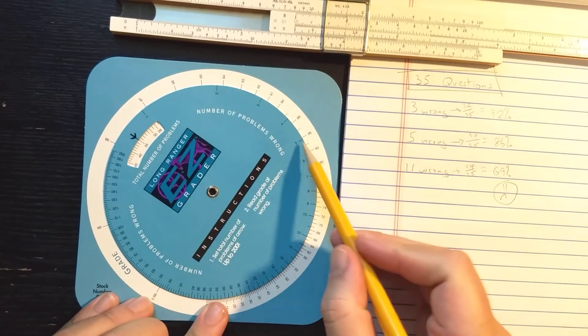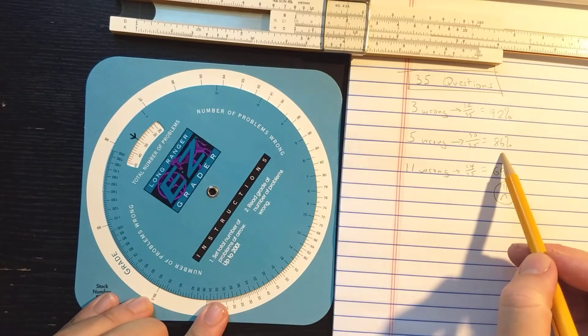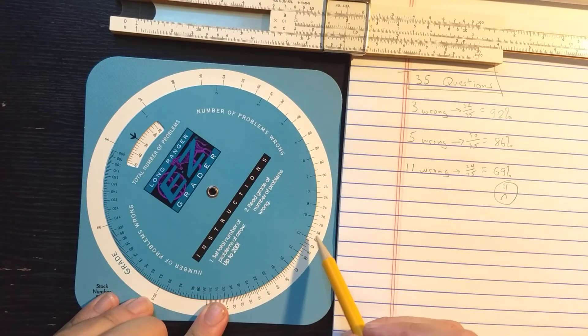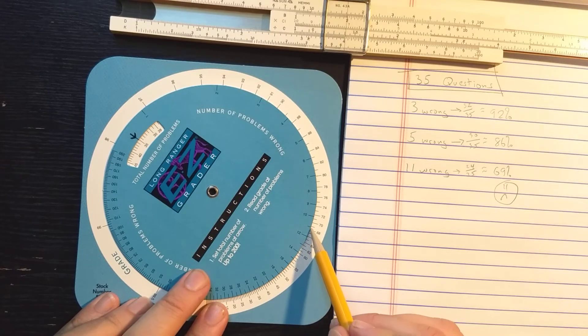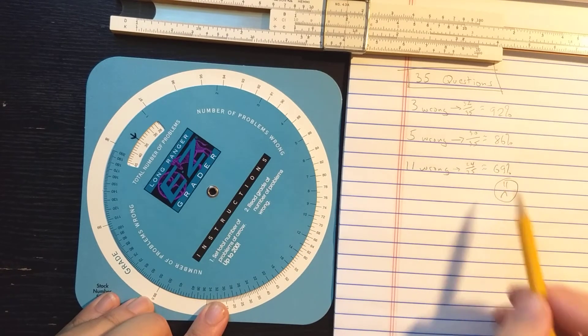Okay, five wrong, five wrong. Okay, pretty close to 86. 11 wrong. There's 11. Rounds up slightly to 69 there. Do you see how it works?